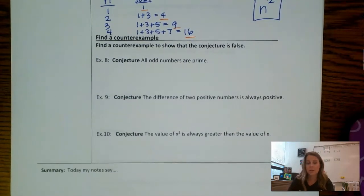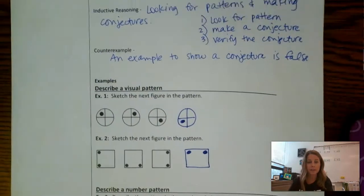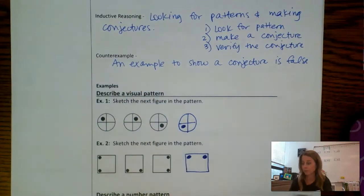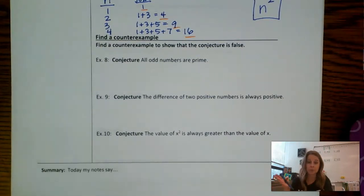Let's finish the last part here with counterexamples. So at the very beginning we defined a counterexample as an example that shows a conjecture is false. So if you can come up with just one example that disproves the statement, then you have just proven the whole thing false.